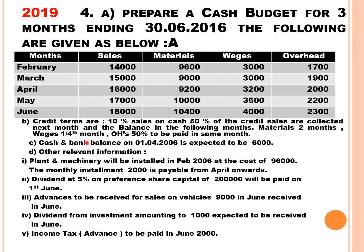For wages, there is a lag of one quarter month — that is, 75% (three-fourths) will be paid in the same month and 25% (one-fourth) will be paid in the next month. For example, wages of Rs. 3,000 for February: Rs. 2,250 (3/4) will be paid in February and the remaining Rs. 750 (1/4) will be paid in March.